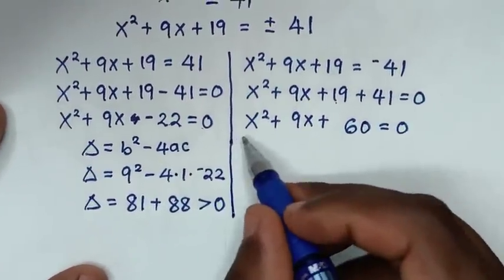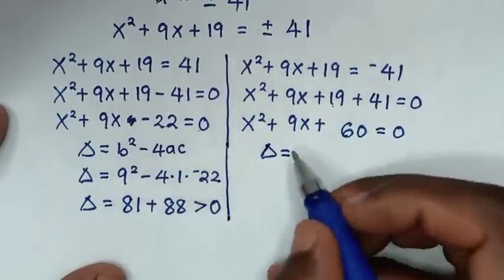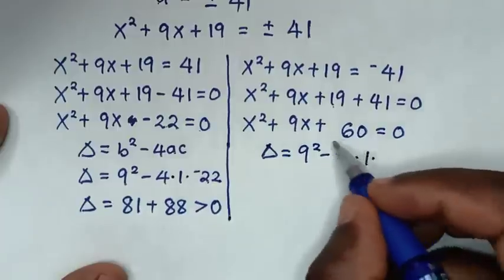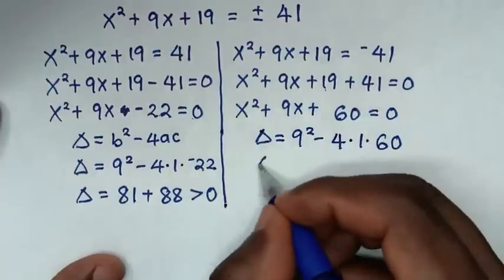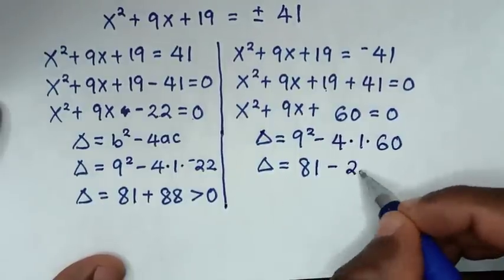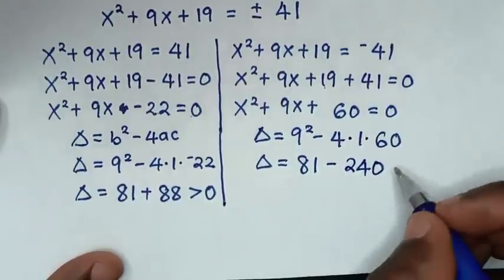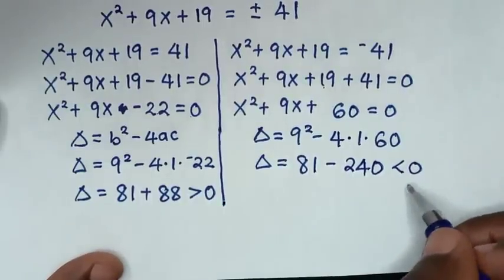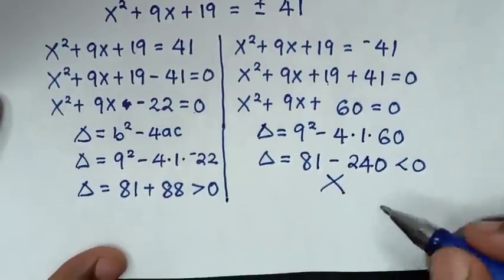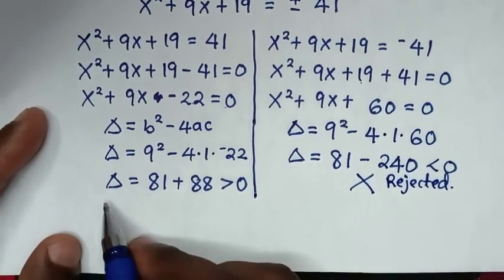For the second equation x²+9x+60 = 0: A=1, B=9, C=60. D = 9² - 4(1)(60) = 81 - 240 = -159, which is less than 0. This does not give a real solution, so this equation is rejected.